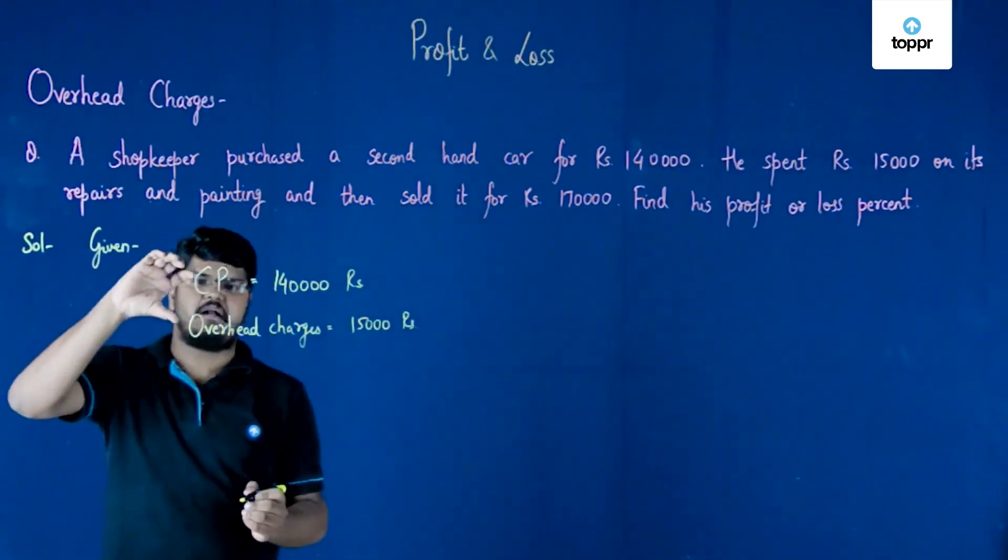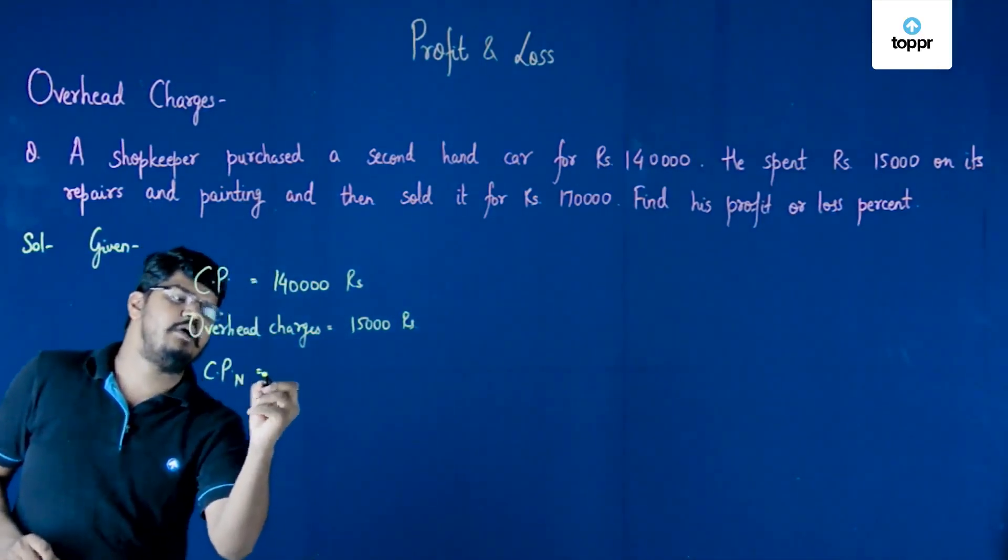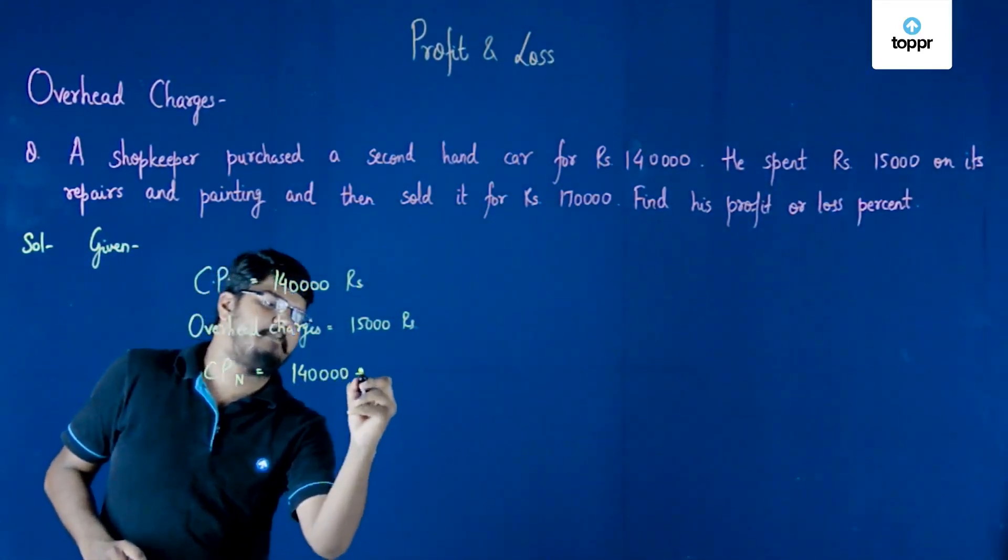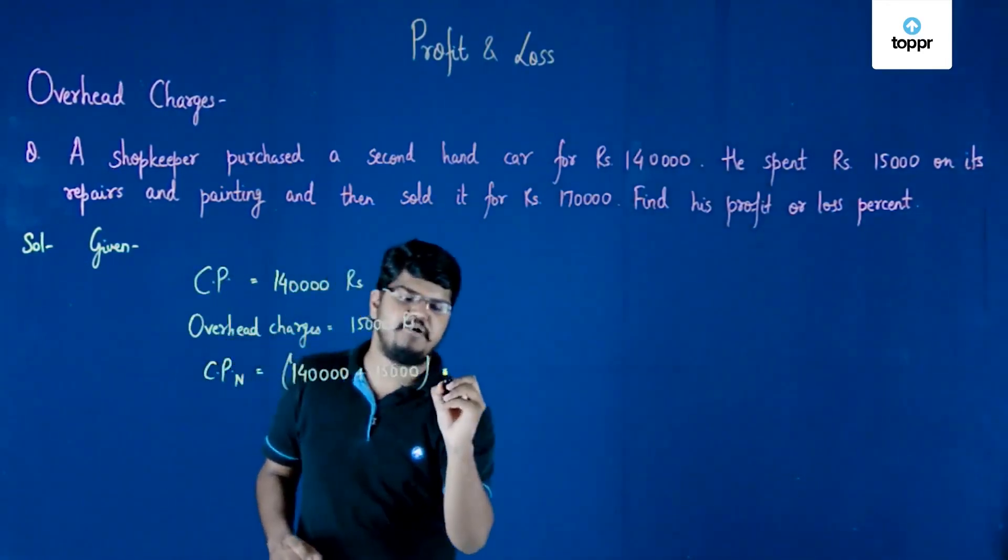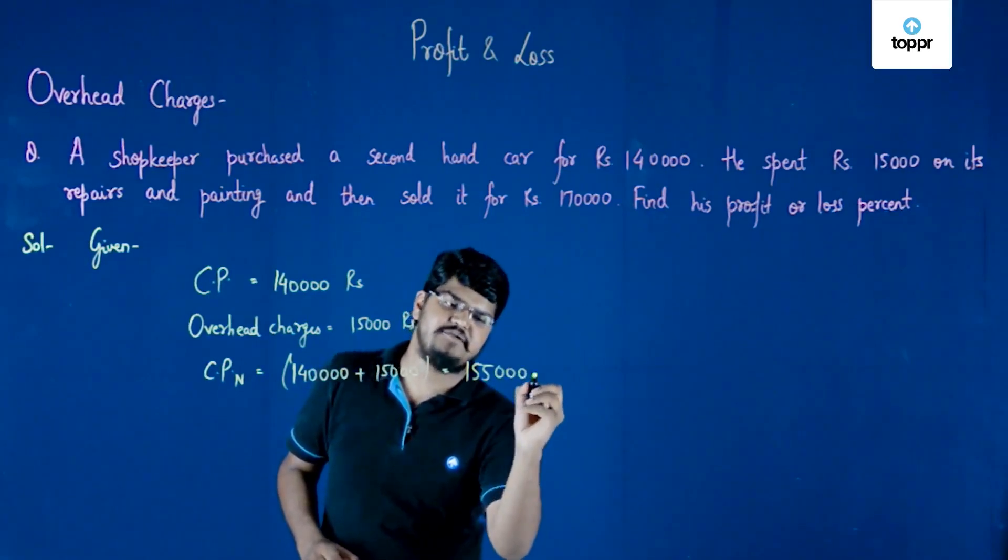Since these two values are my cost price only, I'll get a new cost price now. The cost price new will be equal to 1 lakh 40,000 plus 15,000 rupees. When you add both these terms, you'll see that your new cost price is 1 lakh 55,000 rupees.